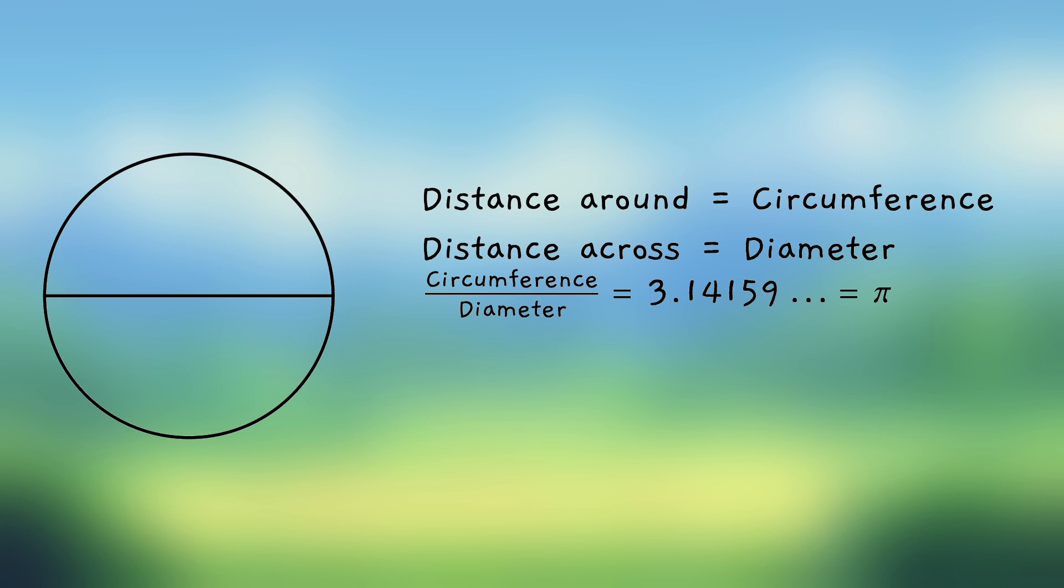And to demonstrate how much of a time saver it is to use letters to stand for numbers, let me write down the formula for the area of a circle once using words and no symbols, and the other using letters. The area of a circle is pi times the radius squared. But if we use letters to stand for all parts of this formula, we can save ourselves a whole lot of writing.